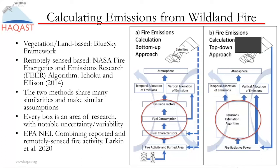Each component in these approaches represents an area of research in itself, with a lot of variability and uncertainty. For example, with fuel characteristics, fuel information on the landscape can easily differ by an order of magnitude depending on the mapping used. Notably, even with the bottom-up approach, satellite information is a key player in many of the methods used.